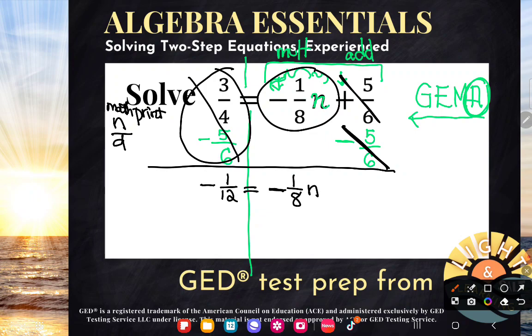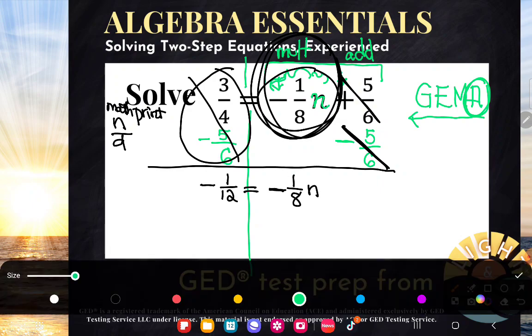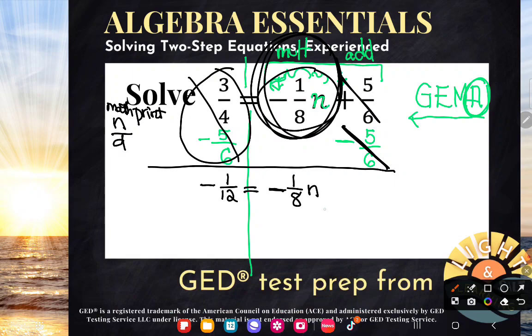So I want n alone. Right now, n is not alone because of this number. And what did we say that this number was doing with n? Well, we said it was multiplying. So if we want to get rid of it, one guaranteed way to do that is to do the opposite of multiplying. The opposite of multiplying is dividing.